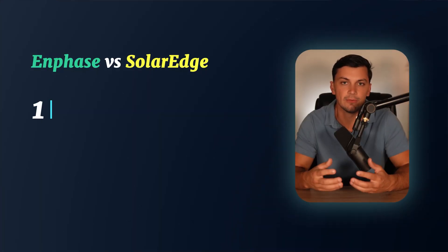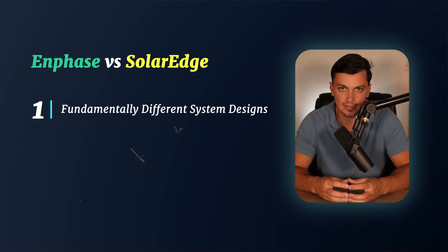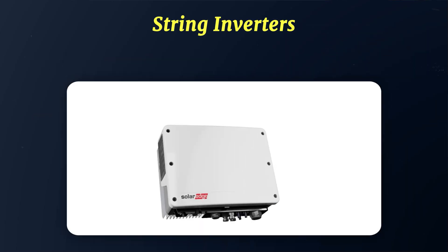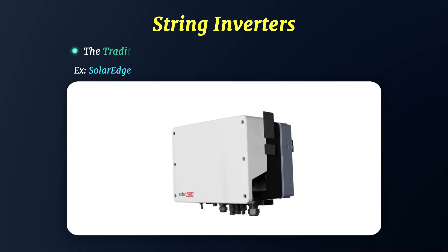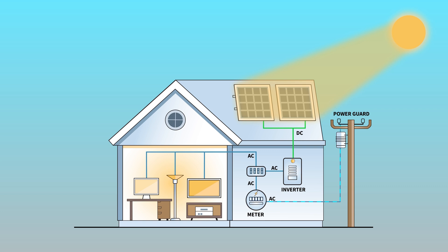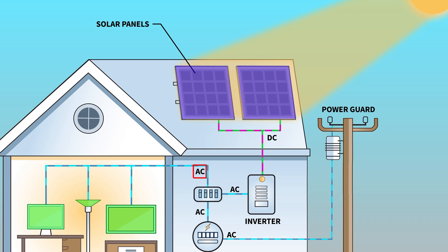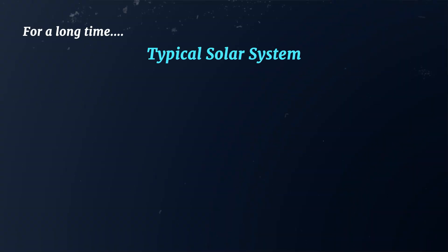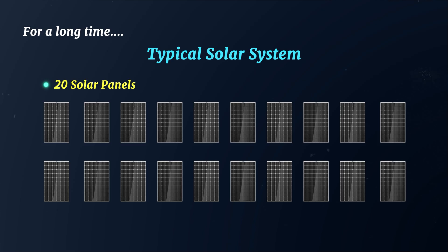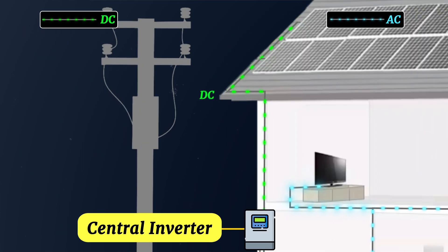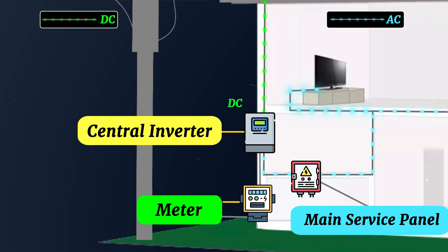The first thing to understand is that these systems function in fundamentally different ways. String inverters, like the ones offered by SolarEdge, represent the traditional approach to solar inverters. With every solar project, an inverter is needed because solar panels generate power in direct current, but our homes use alternating current — AC — and so the inverter handles this required conversion process, DC to AC. For a long time, a typical system setup might include 20 solar panels on the roof, and within that system, the DC power generated from those panels would run down the side of the house through conduit lines into the inverter box.